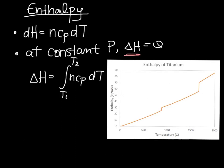This plot shows enthalpy in kilojoules per mole as a function of temperature for titanium. Enthalpy is arbitrarily defined to be zero at 298 K for all elements. We can see a jump where titanium goes from the alpha phase to the beta phase, and another jump up to the liquid phase — the enthalpy change associated with melting. During a phase change, enthalpy increases but temperature does not; heat is being added to break bonds of the solid and form the liquid.